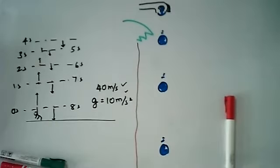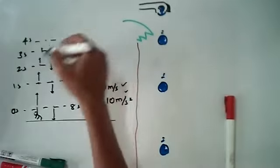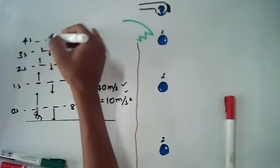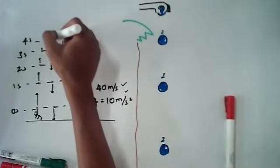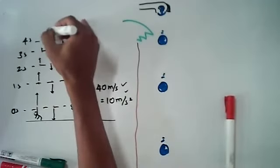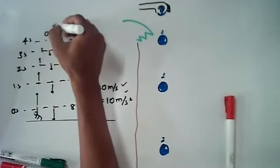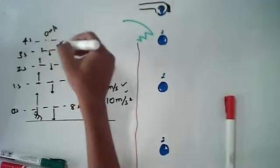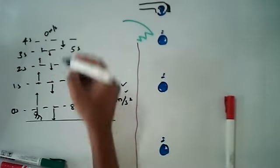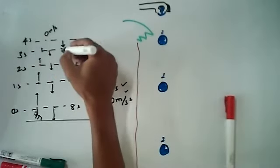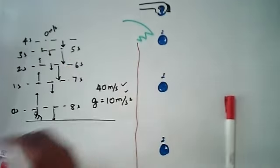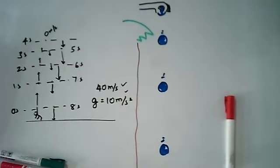Now let's consider taking the highest point at four seconds, where the object then drops. Its velocity is zero meters per second there and it starts falling only under the influence of gravity.